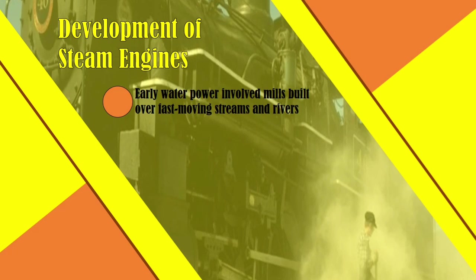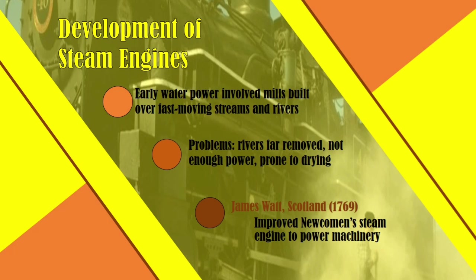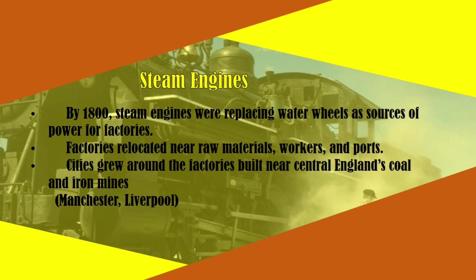Now let's proceed with the development of steam engines. Early water power involved mills built over fast-moving streams and rivers. But there were problems — rivers are far removed, lacked enough power, or were prone to drying. This led to James Watt from Scotland in 1769 improving the steam engine, used to power machinery. By the 1800s, steam engines replaced water wheels as a source of power for factories.